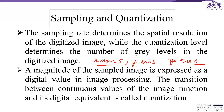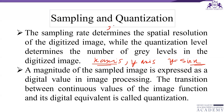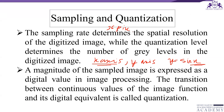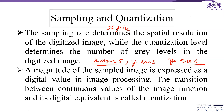For example, if we have a total of 36 pixels, we can say we have a square image of 6×6. In sampling, more samples result in more pixels. For our continuous signal, we have taken 36 samples on the x-axis, which refers to 36 pixels of the image. The number of samples is directly equal to the number of sensors on a CCD array.